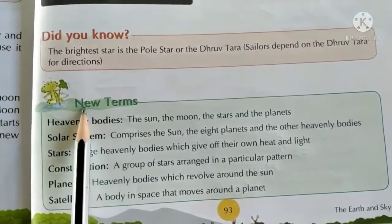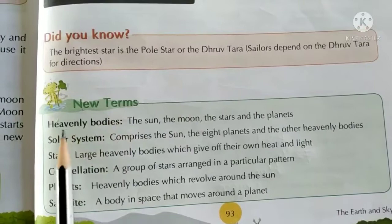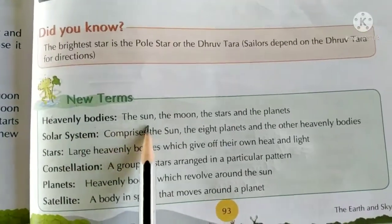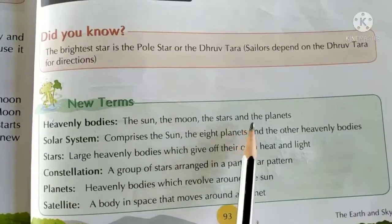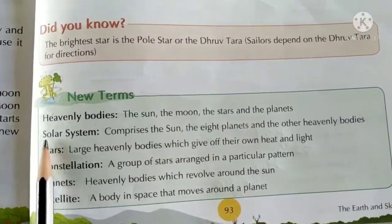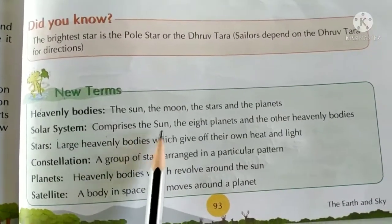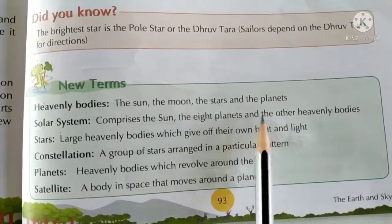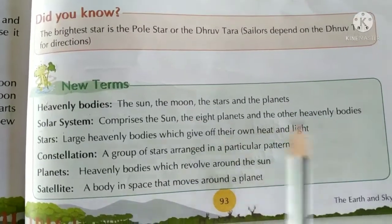The new terms we came across in the chapter are: heavenly bodies, the sun, the moon, the stars and the planets. The solar system comprises the sun, the eight planets, and the other heavenly bodies.